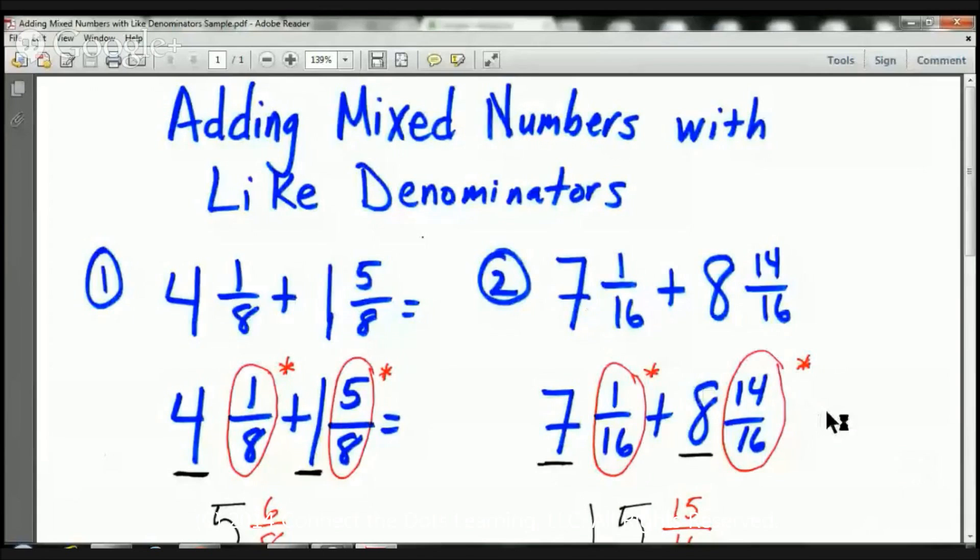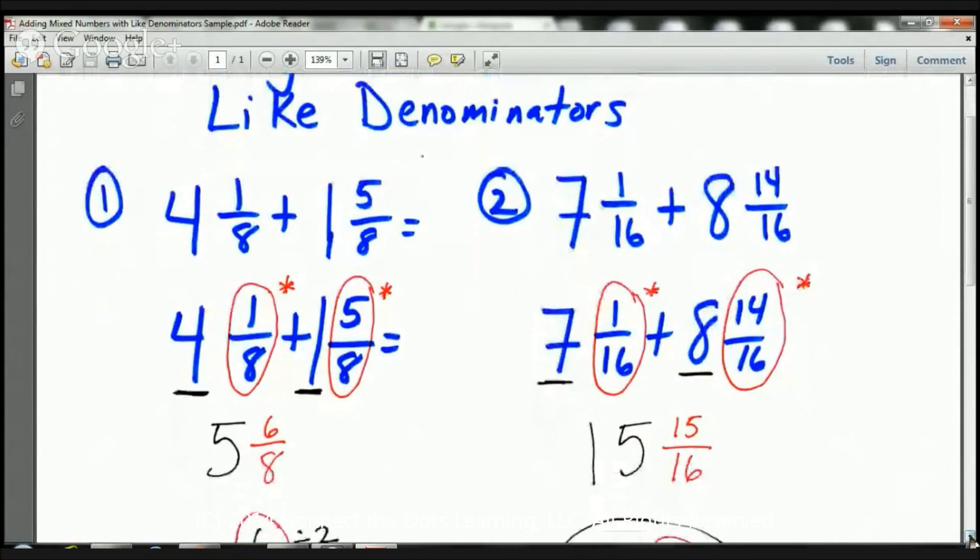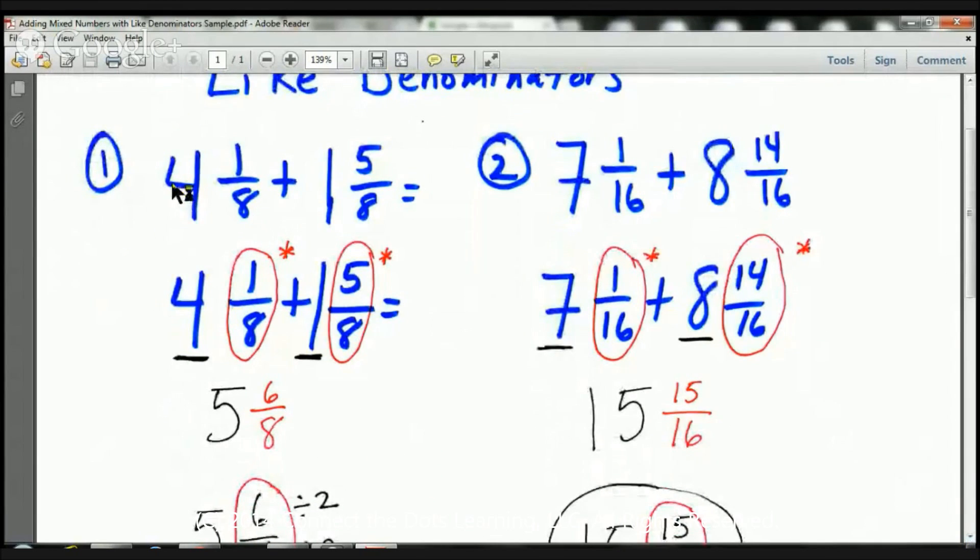So what we're doing today is we're adding mixed numbers with like denominators. And the reason they're called mixed numbers is because we have a whole number like this 4 right here and we have a fraction. That is called a mixed number.